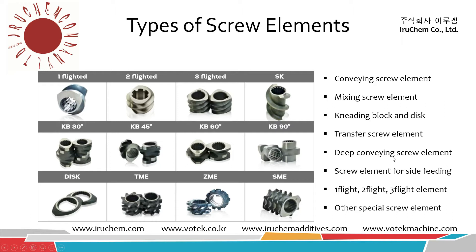The deep conveying screw element is a special element like the SK, which is very deep and has lots of internal volume, so it can push lots of material into the extruder. The screw element for side feeding is also a special element. And there are one-plied, two-plied, and three-plied elements. Some other special screw elements include kneading blocks and mixing screw elements.